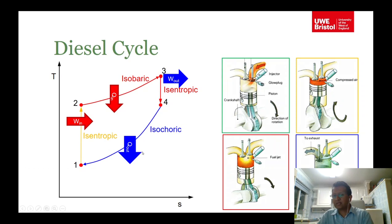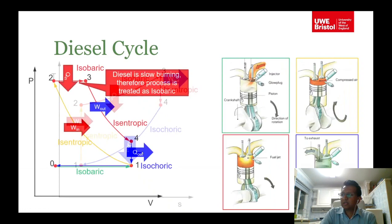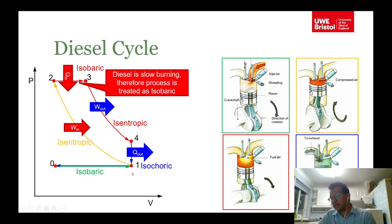The TS diagram for the diesel cycle shows the key difference from the gasoline cycle: in the Otto cycle, heat addition is isochoric; in the diesel cycle, heat addition is isobaric. The other processes — isentropic compression, isentropic expansion, and isochoric heat release — are the same for both cycles.